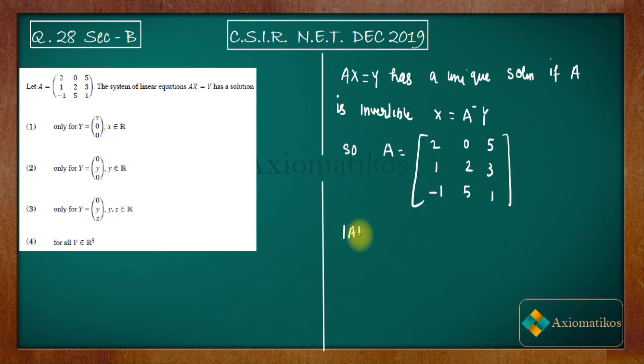It will be 2*(2-15) + 5*(5+2), which equals -26 + 35 = 9, which is non-zero.